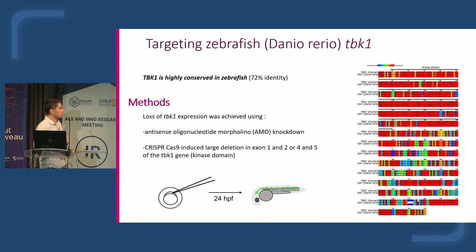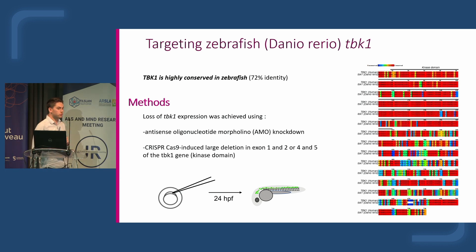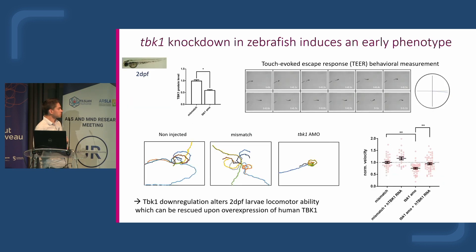In parallel, we designed a CRISPR-Cas9 strategy to induce large deletions in exons 1, 2, 4, and 5, all located in the kinase domain of the TBK1 gene. The major advantage of the zebrafish model is its rapid, transparent, and external embryonic development, allowing us to rapidly investigate phenotypes.